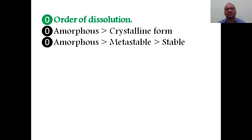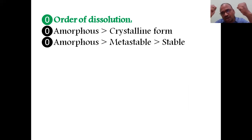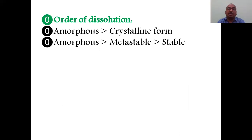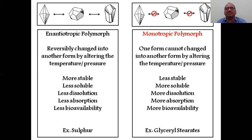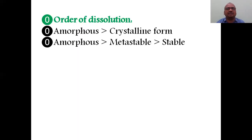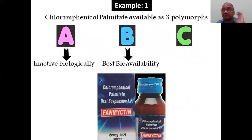The order of dissolution is: amorphous form always shows higher dissolution than the crystalline form, since crystalline is more stable — like a diamond. Amorphous form shows greater dissolution than metastable form, and metastable shows greater dissolution than the stable form.